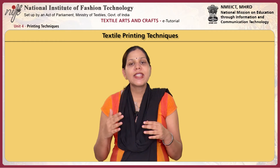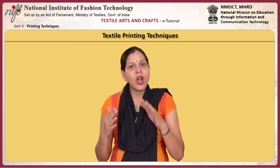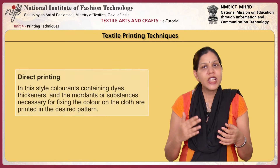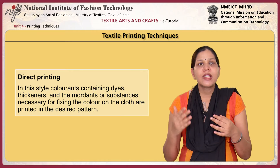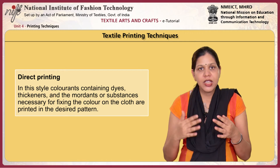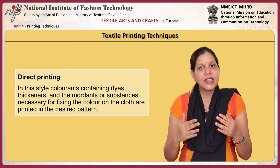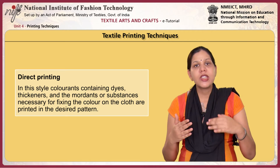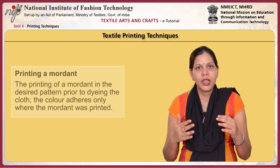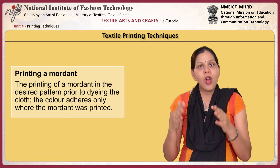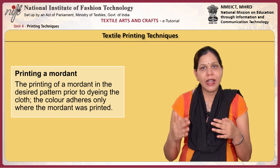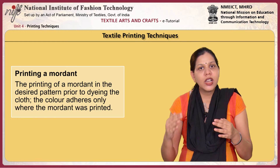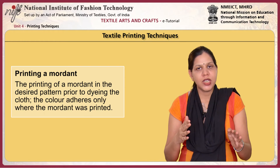Traditional textile printing techniques may be broadly categorised into four styles. In the direct printing style, colourants containing dyes, thickeners and mordants or substances necessary for fixing the colour on the cloth are printed in the desired pattern. In the mordant style, a mordant is printed in the desired pattern prior to dyeing the cloth, and the colour adheres only where the mordant was printed.